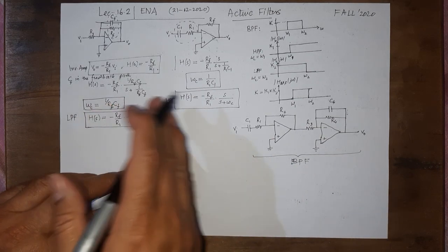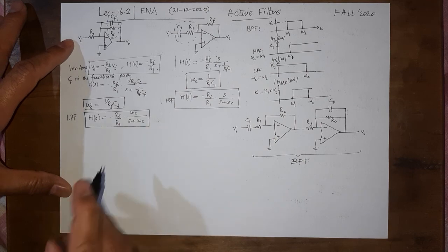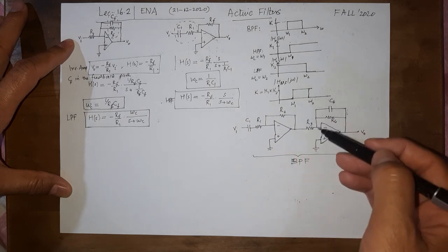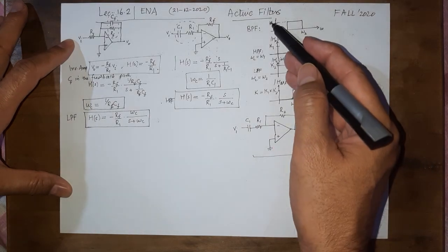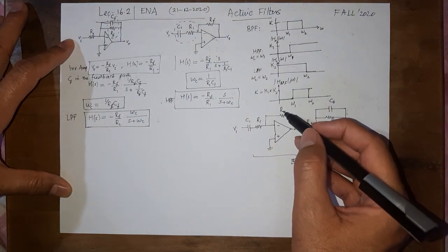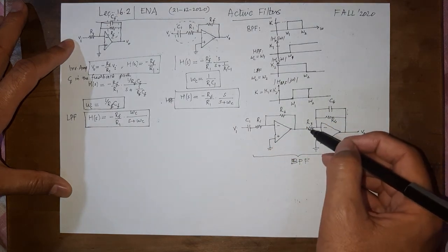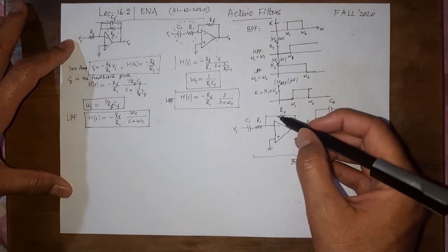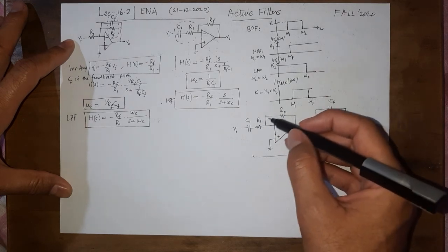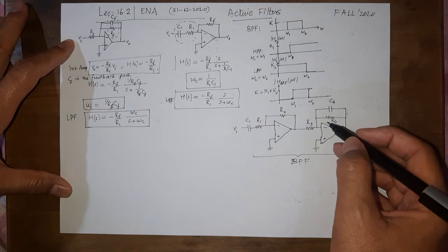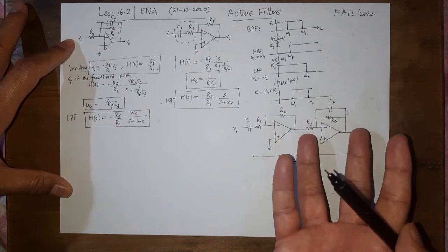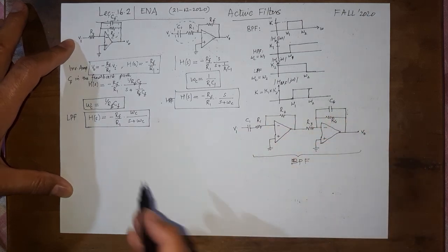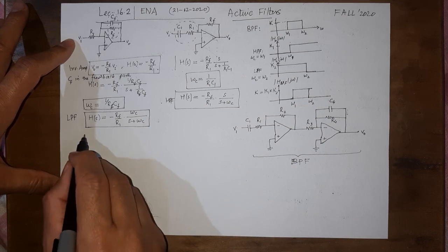Once we know how to make a low pass and a high pass filter, making a band pass filter is straightforward. The overall gain can be set using R1, R2, R3, and R4. For example, if we want K equal to 10, R2 can be 10 kΩ and R1 can be 1 kΩ, or we can split the gain as 2 and 5 across the two stages. The order of the filters — high pass first or low pass first — does not matter since multiplication is commutative.